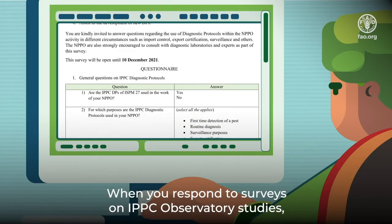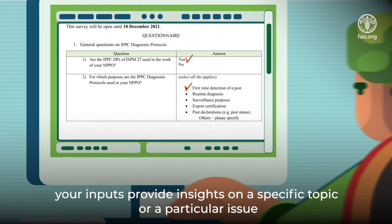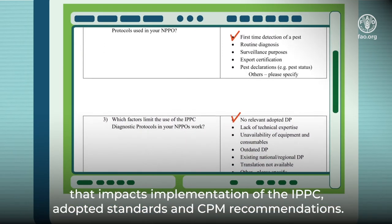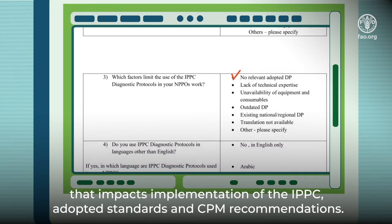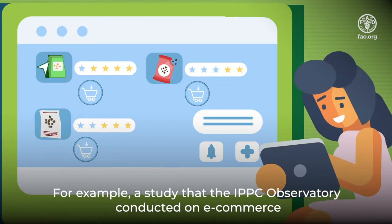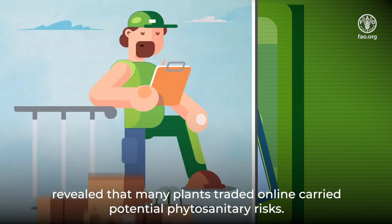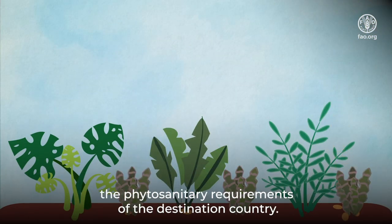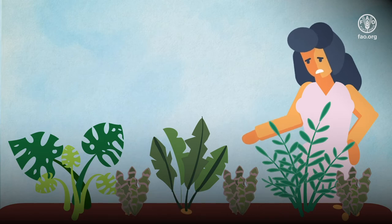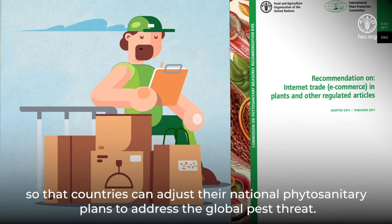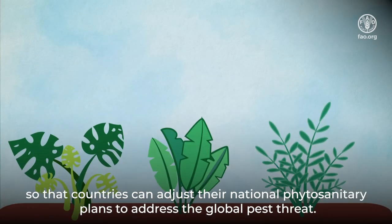When you respond to surveys on IPPC Observatory studies, your inputs provide insights on a specific topic or a particular issue that impacts implementation of the IPPC, adopted standards, and CPM recommendations. For example, a study that the IPPC Observatory conducted on e-commerce revealed that many plants traded online carried potential phytosanitary risks, because some regulated products may not have met the phytosanitary requirements of the destination country. The study brought attention to the need for a new CPM recommendation so that countries can adjust their national phytosanitary plans to address the global pest threat.